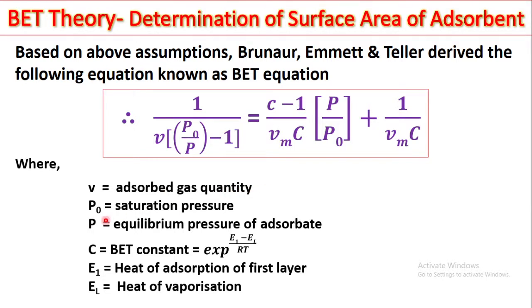P0 stands for the saturation pressure, P stands for equilibrium pressure of adsorbate. C stands for BET constant which is equal to exponential of E1 minus EL upon RT where R stands for molar gas constant and T stands for temperature. E1 is heat of adsorption of first layer and EL is the heat of vaporization.